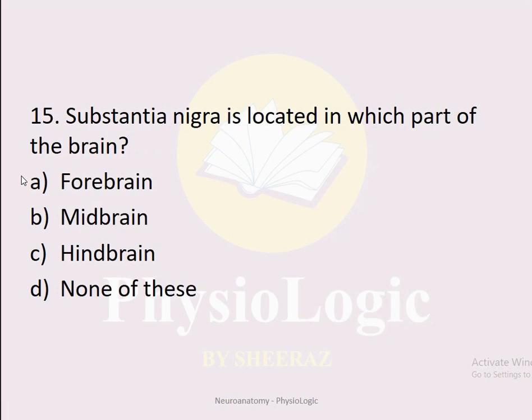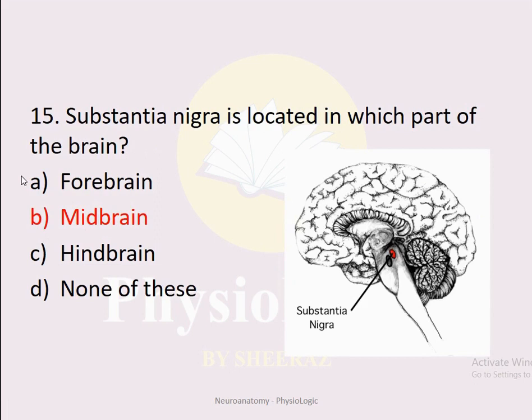MCQ number fifteen: The substantia nigra is located in which part of the brain? Option A: forebrain. Option B: midbrain. Option C: hindbrain. Option D: none of these. The correct option is B: midbrain. Substantia nigra is an important nucleus linked with Parkinson's disease — damage to substantia nigra causes Parkinson's disease.